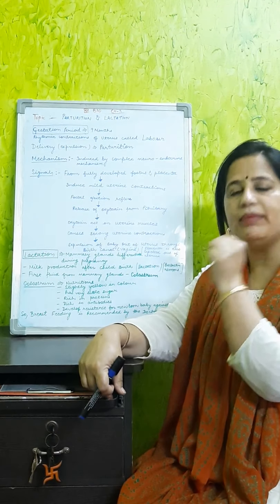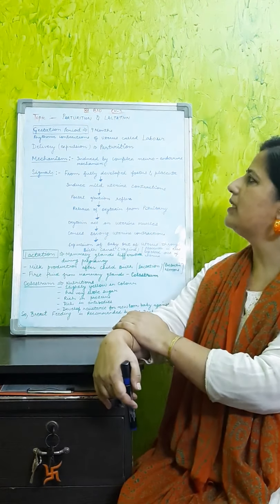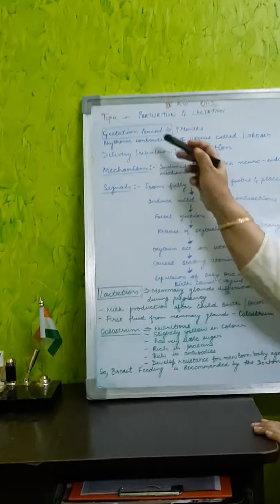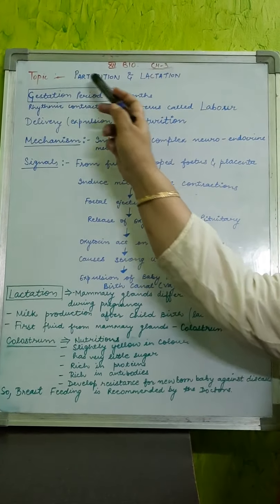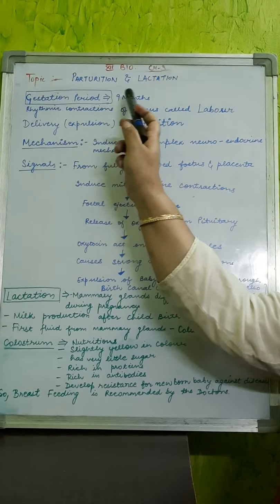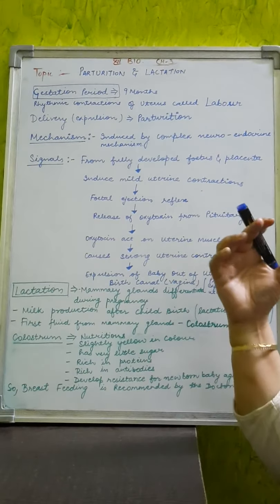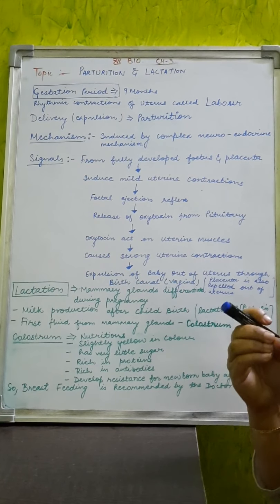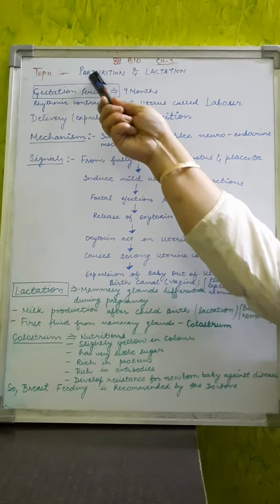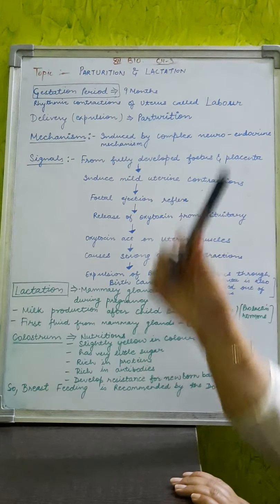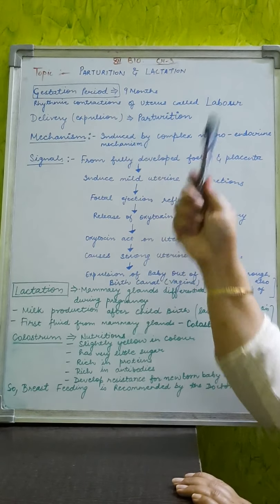As you are very much aware that there is 9 months of pregnancy period in a human female and that pregnancy period is particularly named as gestation period. So we will write here now gestation period, what is the gestation period, that is 9 months pregnancy period and after 9 months what happens, there is expulsion of the fetus or infant from the mother's body and that process is known as parturition. So what is parturition?